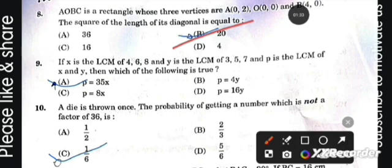Next question: If x is the LCM of 4, 6, 8 and y is the LCM of 3, 5, 7 and p is the LCM of x and y, then which of the following is true: p is equal to 35x. Next question: A die is thrown once, then the probability of getting a number which is not a factor of 36 is 1/6.